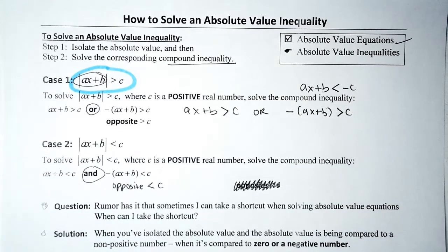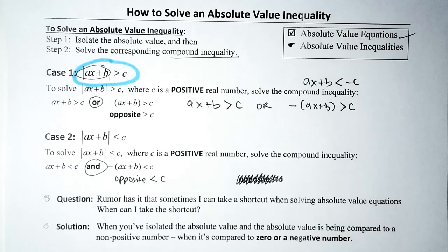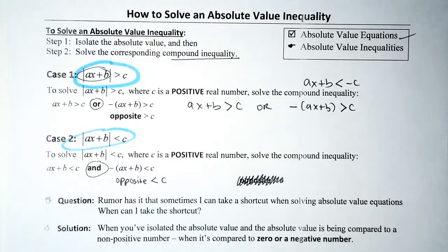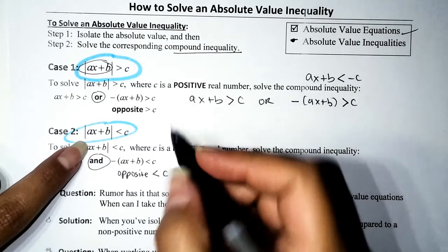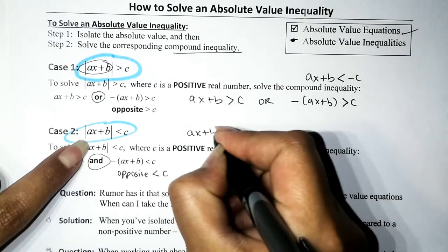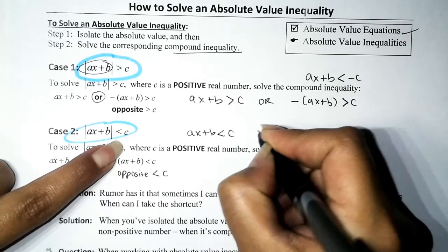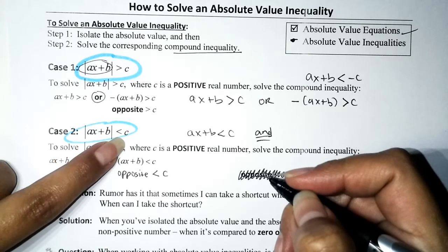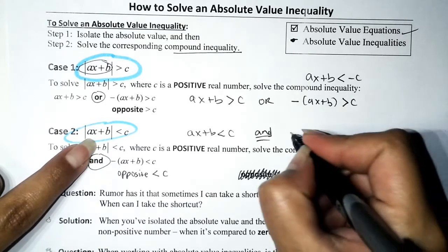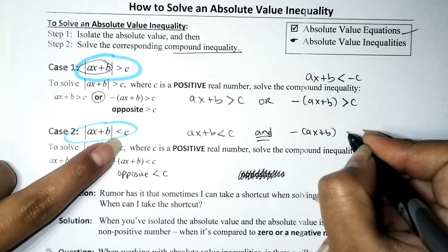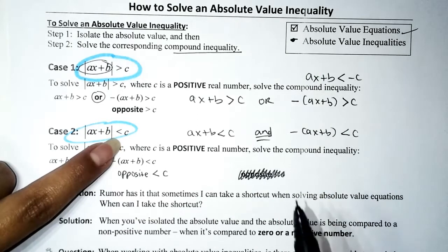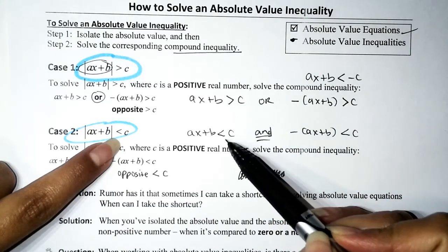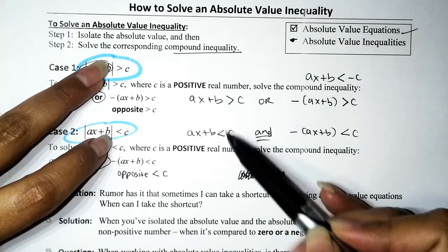Case two: if we have an absolute value inequality with the less-than symbol, assuming the absolute value is isolated, we set it up as: the inside is less than C, AND the opposite is less than C. There's no need to memorize — you just copy the inequality symbol. The only thing to remember is whether it's going to be an AND or OR compound inequality.